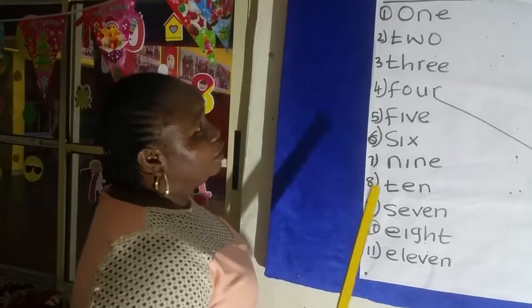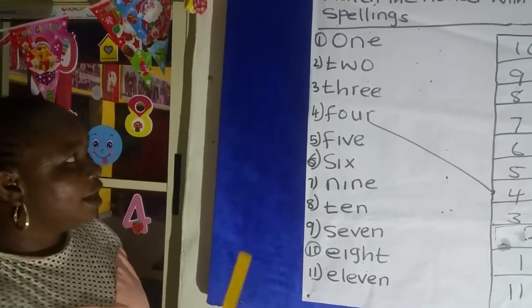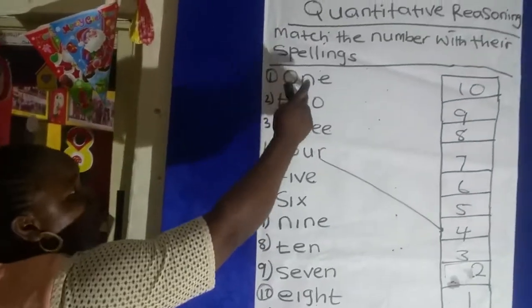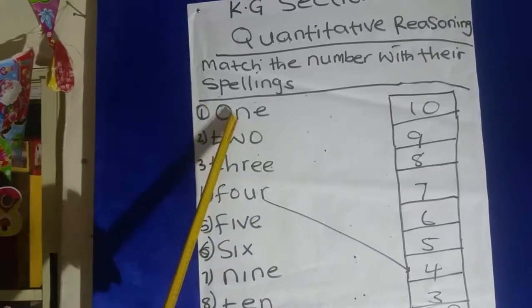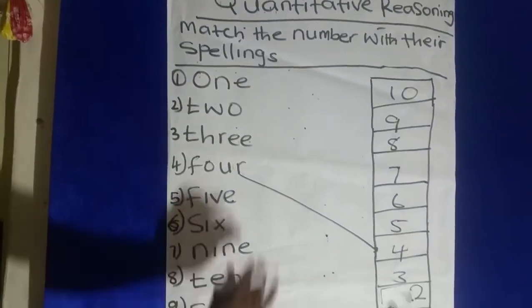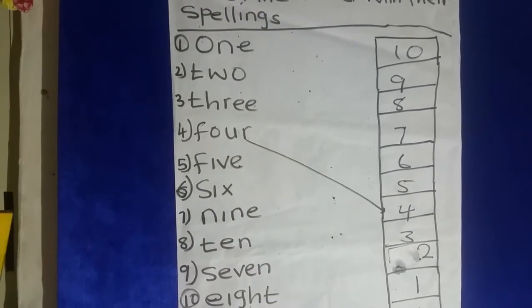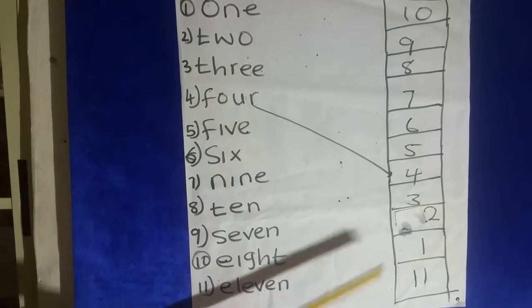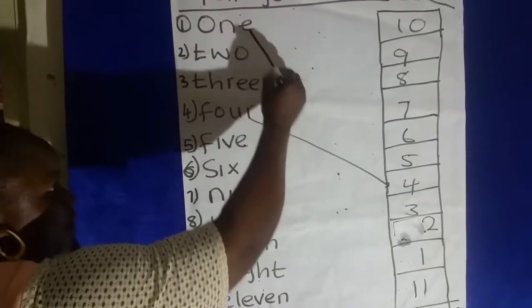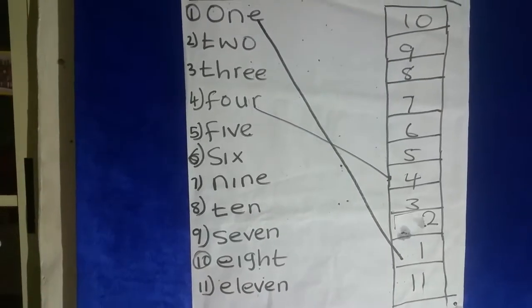So today we are going to match the number with the spelling. This is O-N-E one. We are going to look at number one. Who can show me number one? This is number one. So we match. We are going to match it. Good. Clap for yourself.